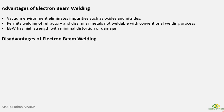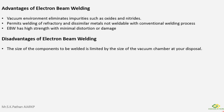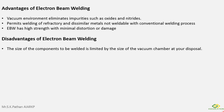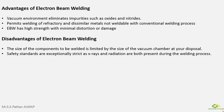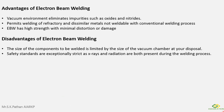Disadvantages of electron beam welding: First, the size of the components to be welded is limited by the size of the available vacuum chamber — the vacuum chamber size decides the maximum weld material size. Second, safety standards are exceptionally strict, as both X-rays and radiation are present during the welding process.